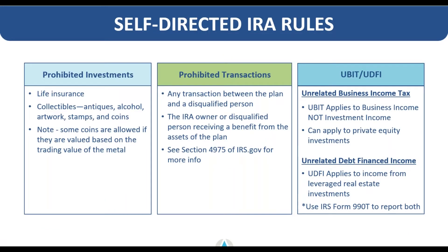Jumping into the rules about self-directed accounts: the only types of investments that the IRS deems to be prohibited are investing into life insurance policies and collectibles such as antiques, alcohol, fine wine, stamps, and certain types of coins. Basically anything the IRS deems to have a subjective value is going to be considered a collectible and not able to be invested by a retirement account.